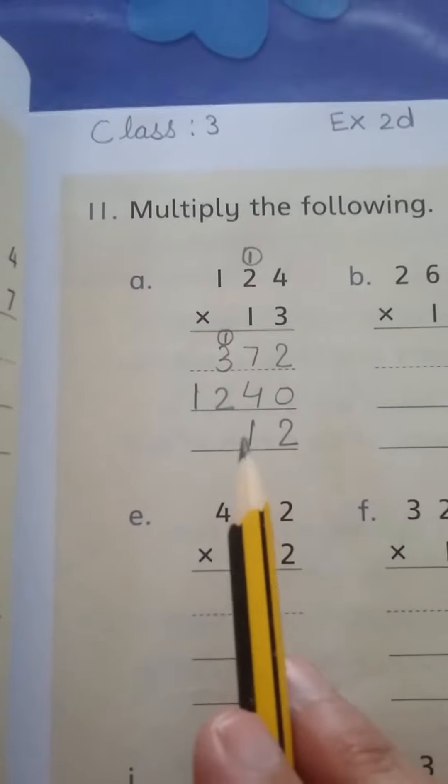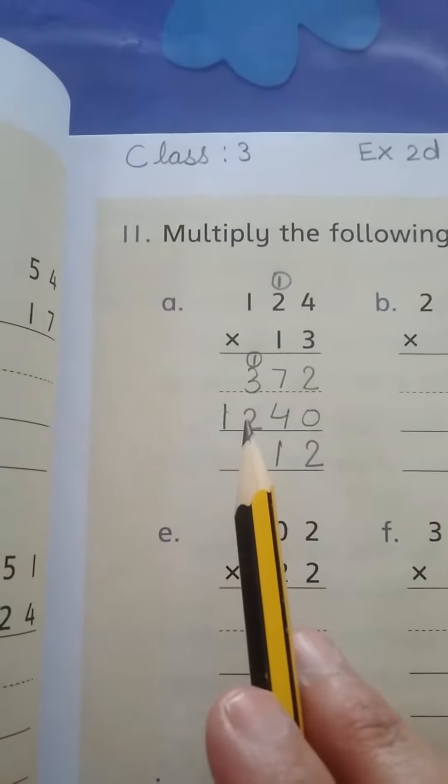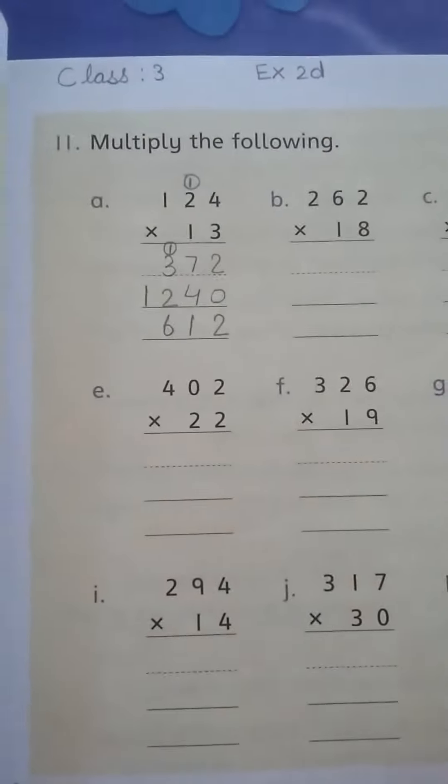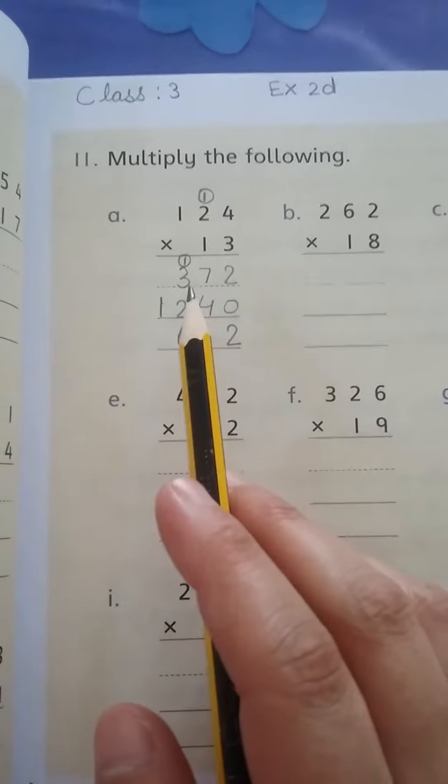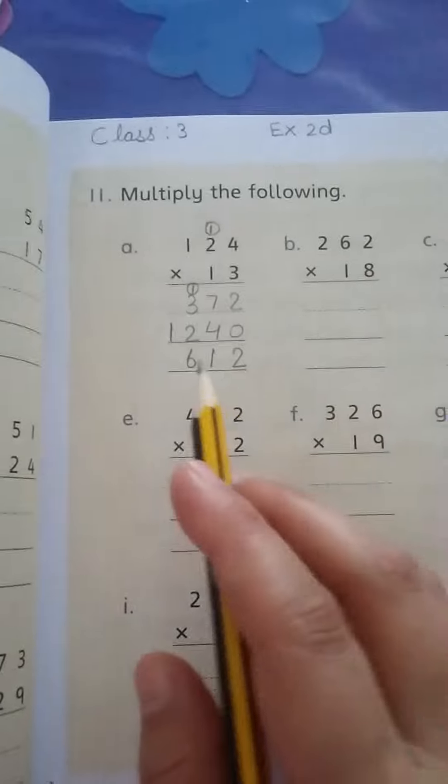I write one here and carry one to this column. Now three plus two is five, plus this one is six. One plus zero is equal to one.